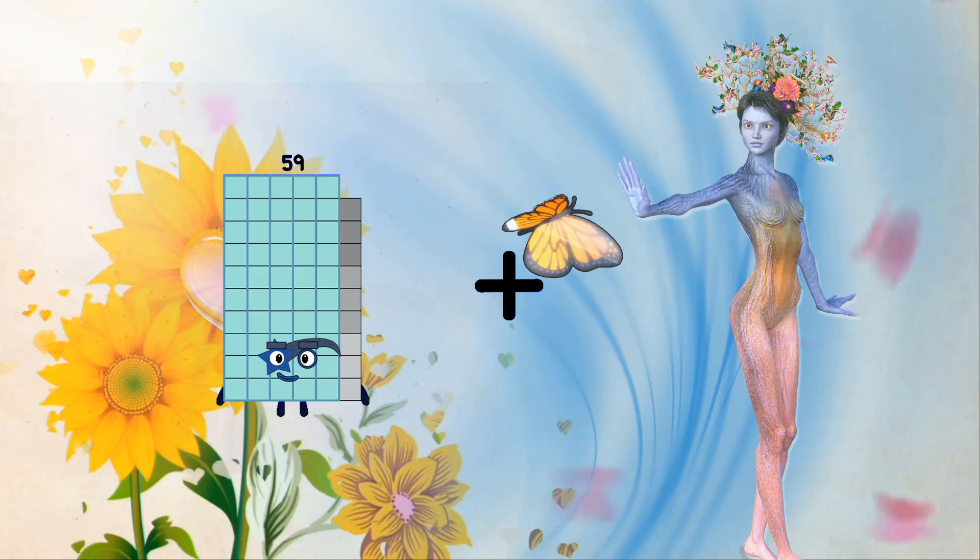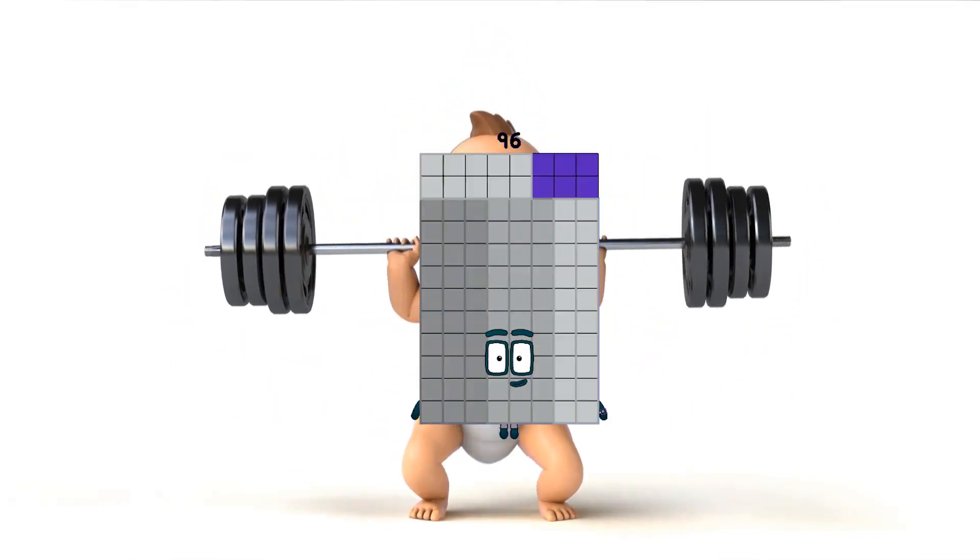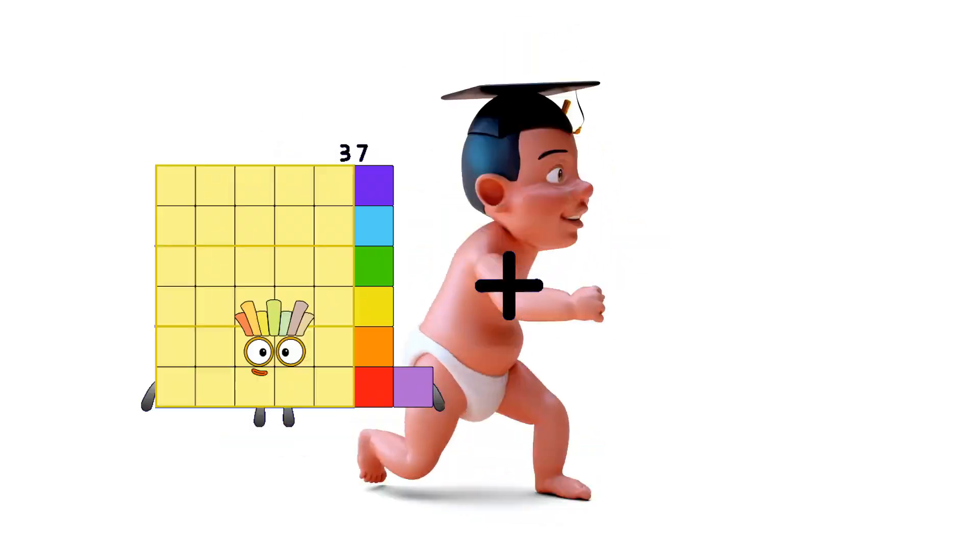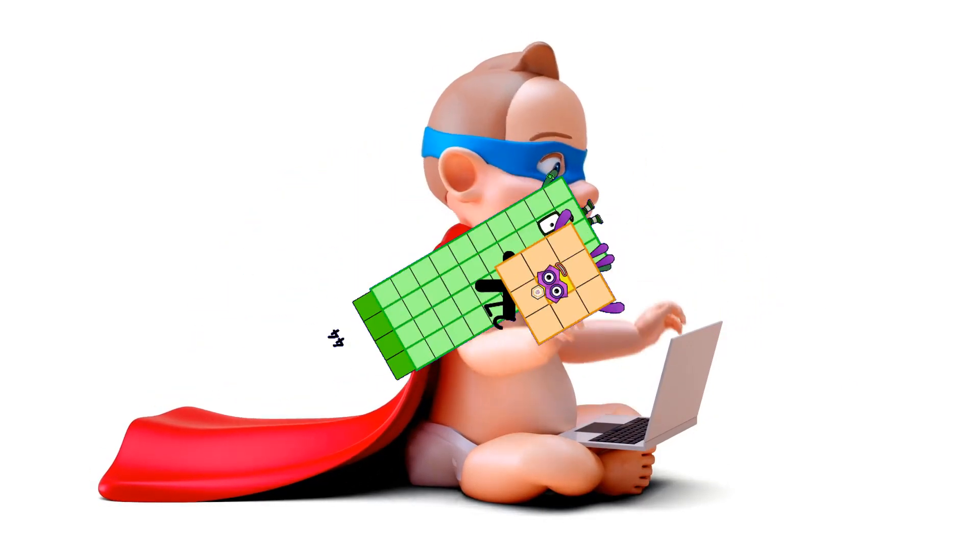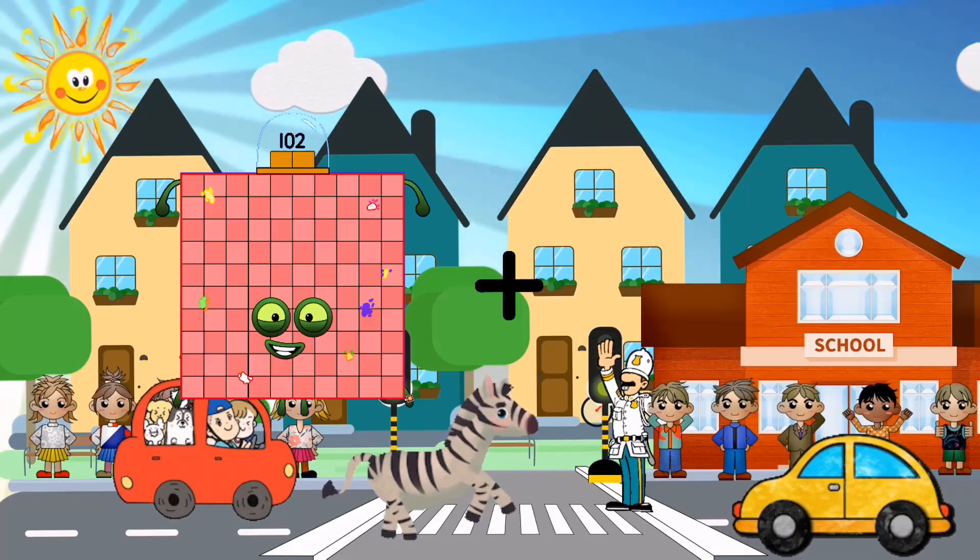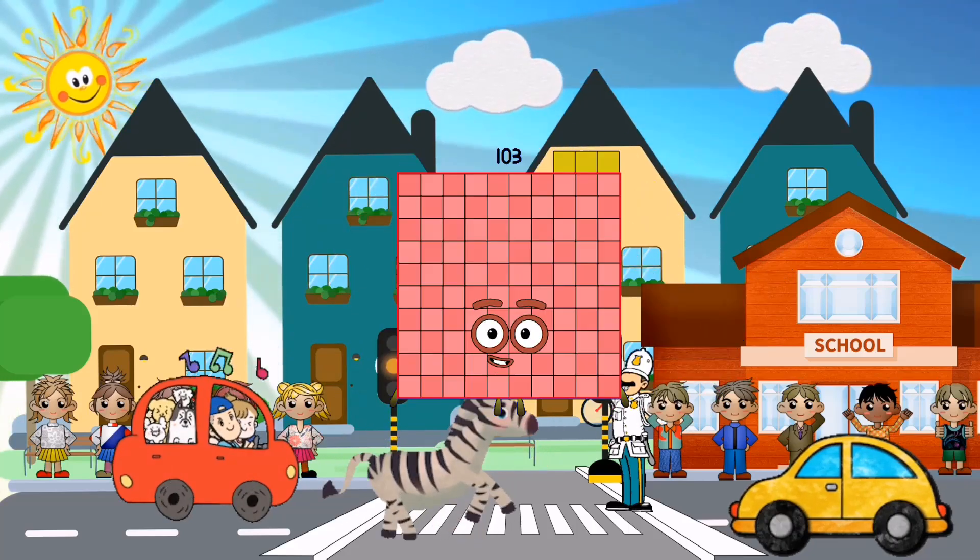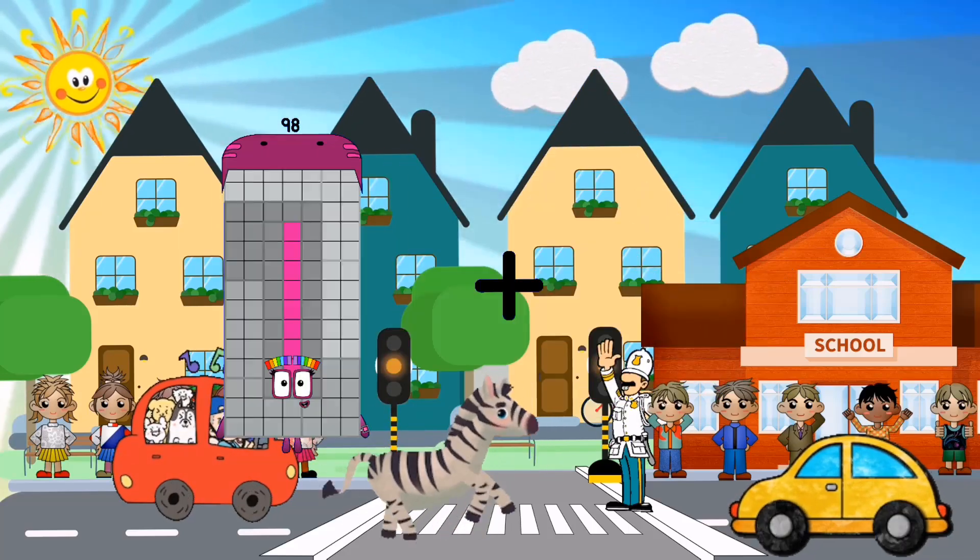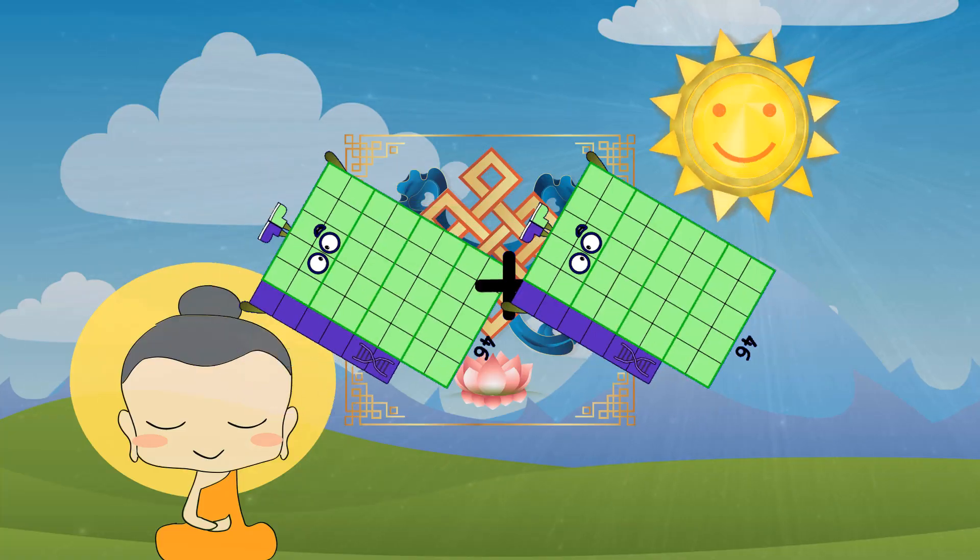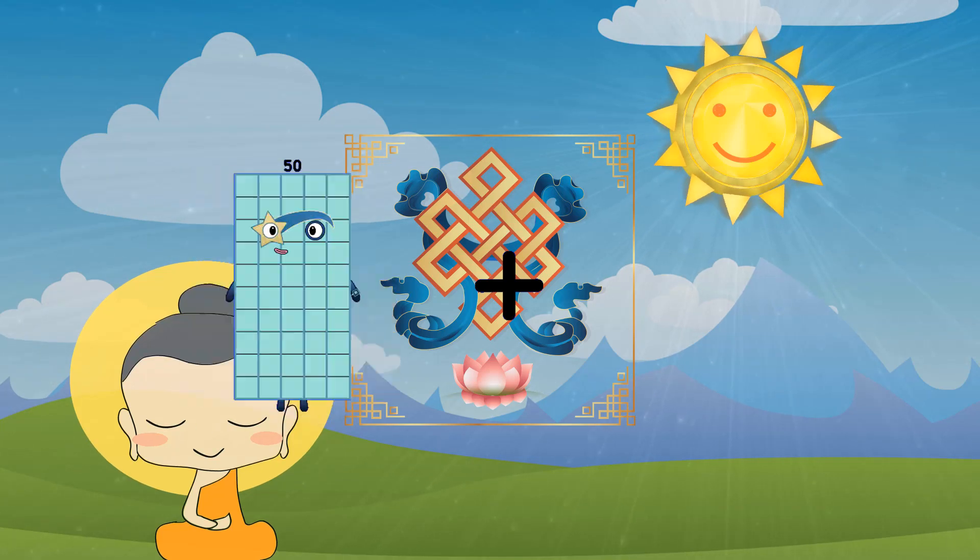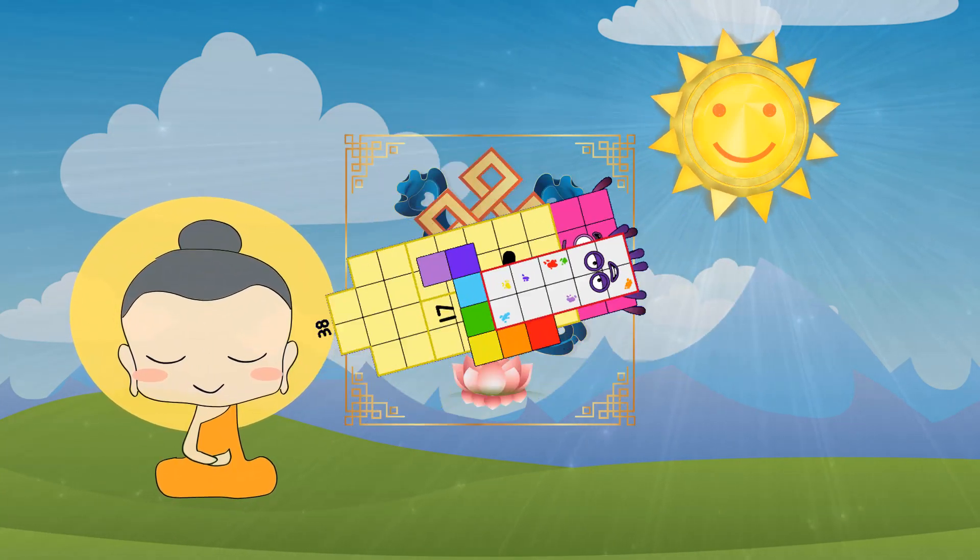44 plus 27 equals 71. 51 plus 88 equals 103. 46 plus 46 equals 92. 38 plus 17 equals 55.